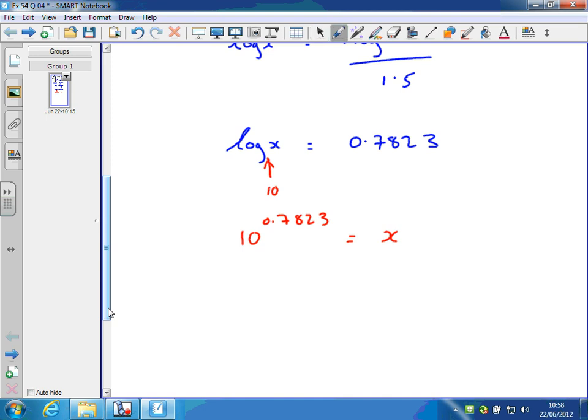So if you work that out, we get x equal to the answer in the textbook, 6.058 to 3 significant figures. Sorry, 4 significant figures.